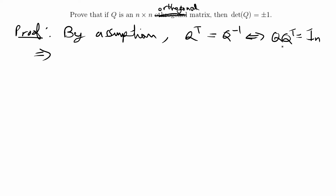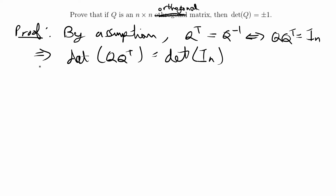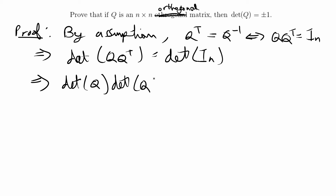From this basic assumption, we can take the determinant of both sides. So we have the determinant of Q times Q transpose equals the determinant of an n by n identity matrix. There's a theorem that says the determinant of any identity matrix equals 1. There's also a property that lets us split the determinant of a matrix product: the determinant of Q times Q transpose equals the determinant of Q times the determinant of Q transpose, and this equals 1.